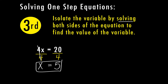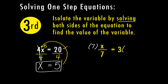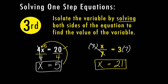We can take our answer and substitute for the variable in the original problem to make sure it works. If I substitute 5 for x, 4 times 5 equals 20 — so that checks out. For example 2, I had x divided by 7, and the opposite was multiplying by 7 on both sides. 7 divided by 7 on the left side equals 1, and 1 times x equals x. On the right side, 3 times 7 equals 21, so x equals 21. Plugging back in, 21 divided by 7 equals 3 — so this one checks out as well.